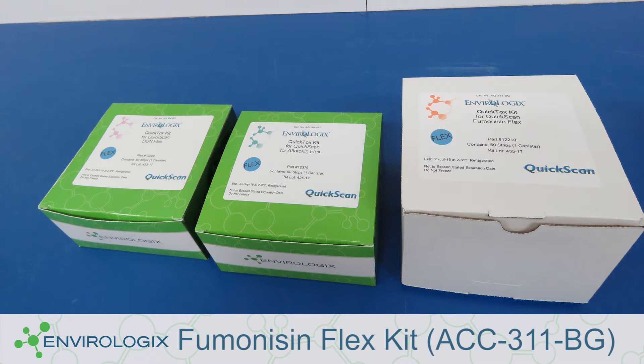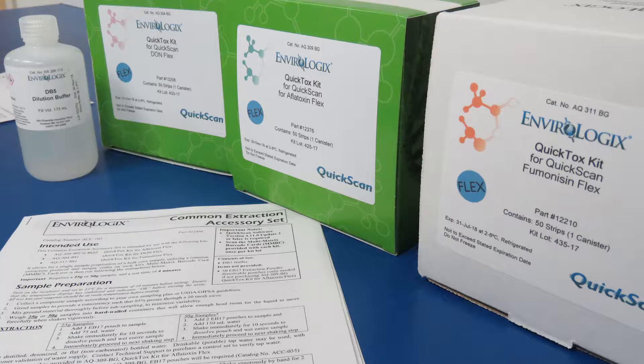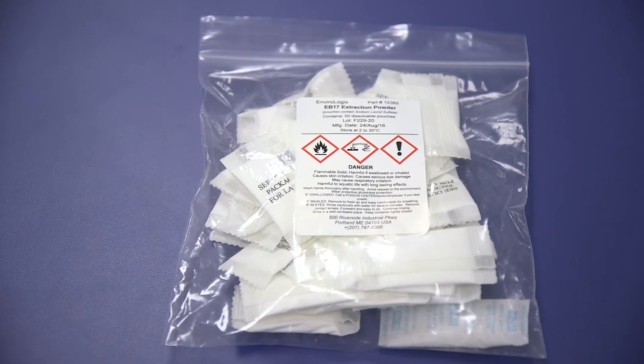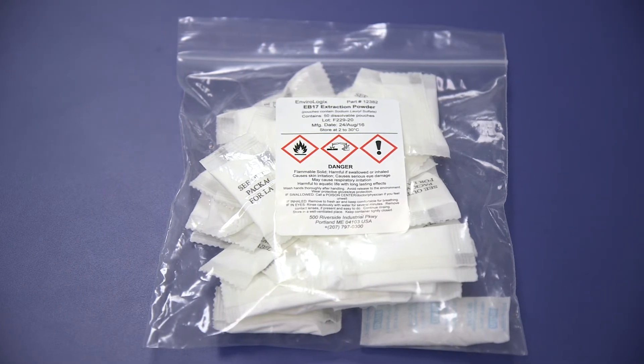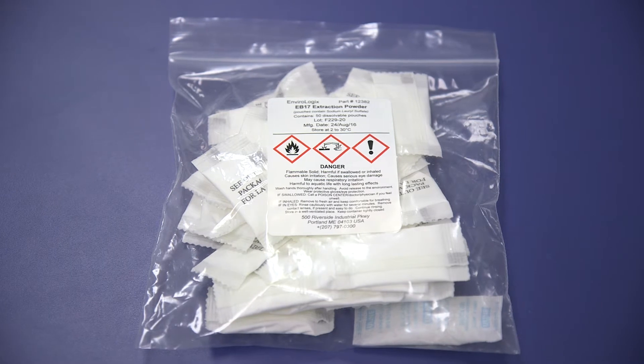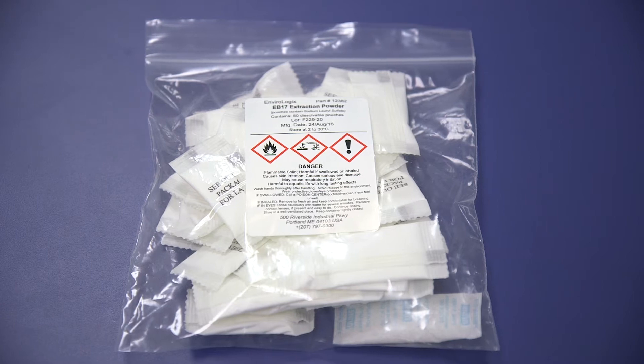The following items are not provided in the common extraction set but are required for testing: FLEX mycotoxin kits, 50 EB-17 extraction powder dissolvable pouches. These are only required if testing 50 gram samples for GIPSA certification or if you are not purchasing an Aflatoxin Flex kit.